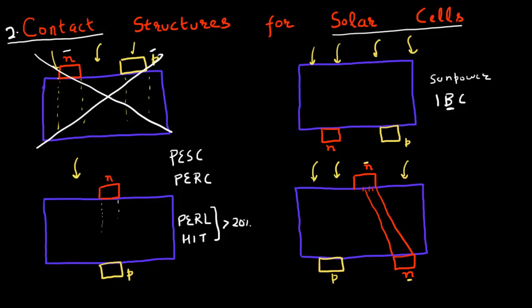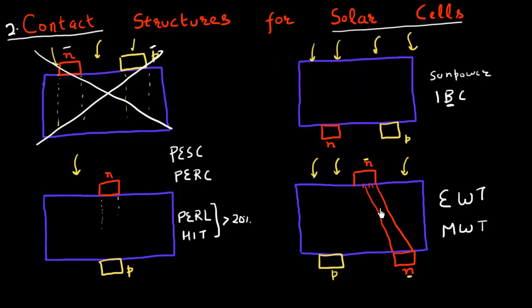There could be two different configurations of achieving this: one is called emitter wrap-through, and the other is metal wrap-through. Both of these designs help you minimize the amount of contact metal facing the sunlight. They achieve that by moving features such as bus bars, which occupy a lot of area on the front and cause shading, towards the back of the solar cell.